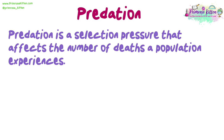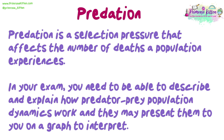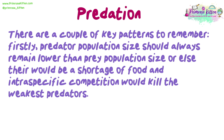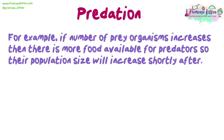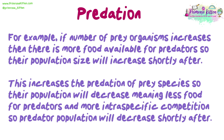Predation is a selection pressure that affects the number of deaths a population experiences. In your exam, you need to be able to describe and explain how predator-prey population dynamics work, as they may present them on a graph to interpret. There are a couple of key patterns to remember. First, predator population size should always remain lower than prey population size, or else there would be a shortage of food and intraspecific competition would kill the weakest predators. Additionally, predator population size will always peak and trough after a prey population. For example, if prey numbers increase, there is more food for predators, so their population increases shortly after. This increases predation of prey, so their population decreases, meaning less food for predators and more intraspecific competition, so predator population decreases shortly after.